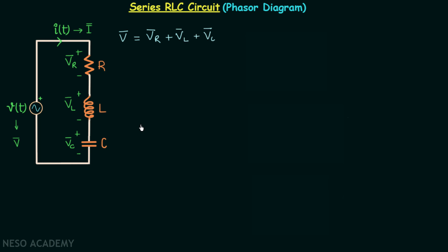These three elements together will provide an obstruction to the current flow, and that obstruction we call the impedance. The impedance offered by these three elements together is Z.